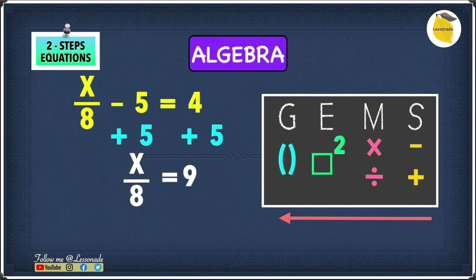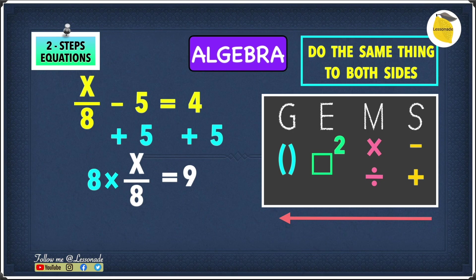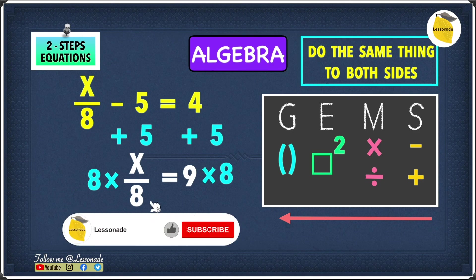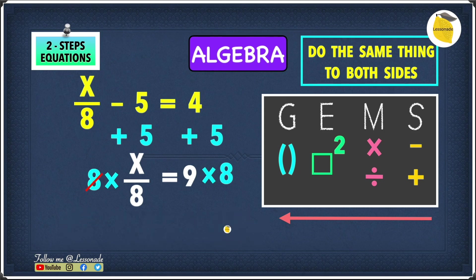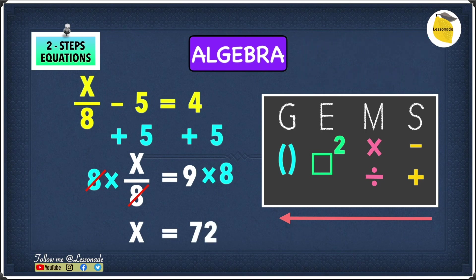Next we undo the division by 8. To undo dividing by 8 we multiply by 8. We do the same to both sides: 8 times x over 8 — the 8s cancel each other out, leaving just x. And 9 times 8 gives us 72. So our answer is x equals 72.